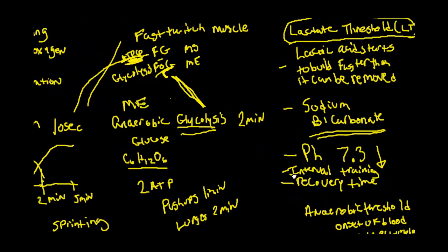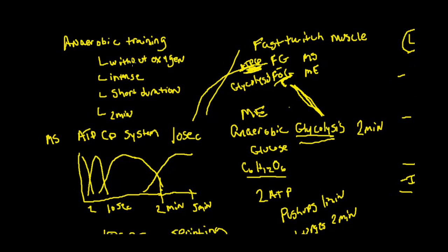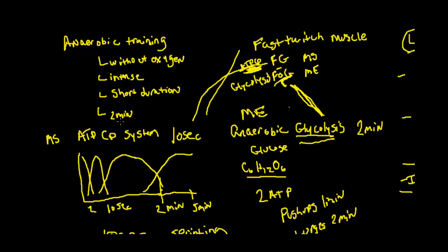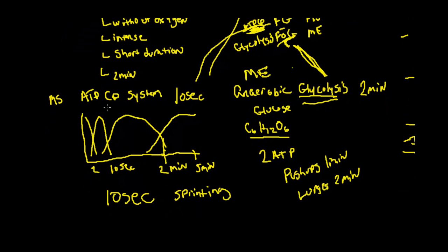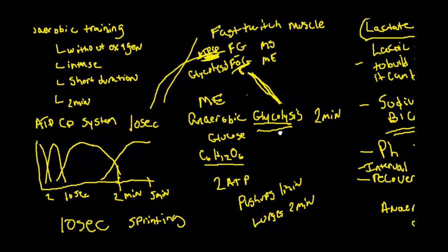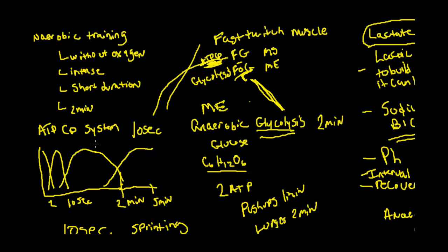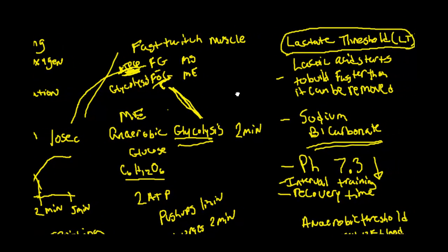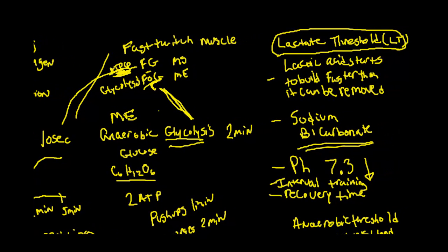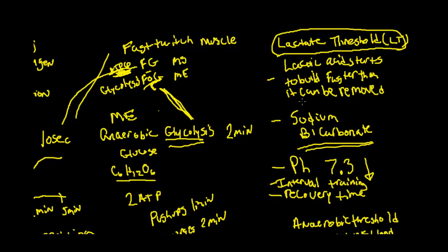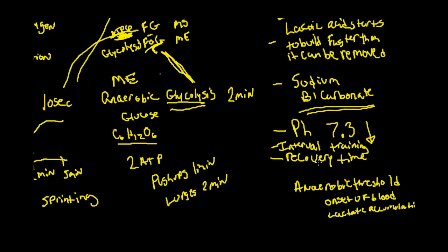To summarize: anaerobic training is short duration, no more than two minutes. The ATP-CP system lasts about 10 seconds, then anaerobic glycolysis takes over from 10 seconds up to two minutes. Training focused on muscle strength develops fast-twitch glycolytic muscle, which is explosive. Muscle endurance training develops fast-twitch oxidative glycolytic fibers. The best way to improve the anaerobic system is to improve your lactate threshold — your ability to buffer and clear lactic acid — through interval training.